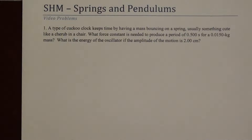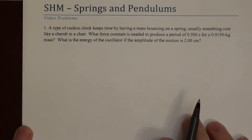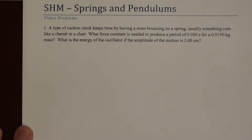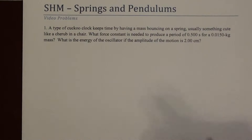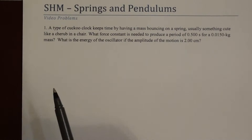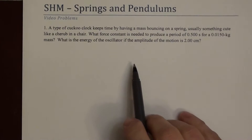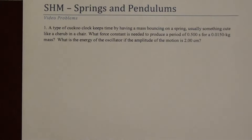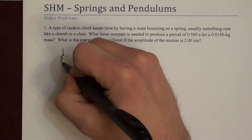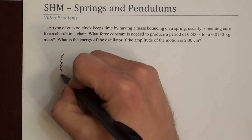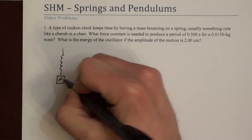Here are a couple of problems relating to the simple harmonic motion of springs and pendulums. The first problem says a particular cuckoo clock keeps time by having a mass bouncing on a spring — it suggests a cherub in a chair. So we have a spring and a mass on the spring.